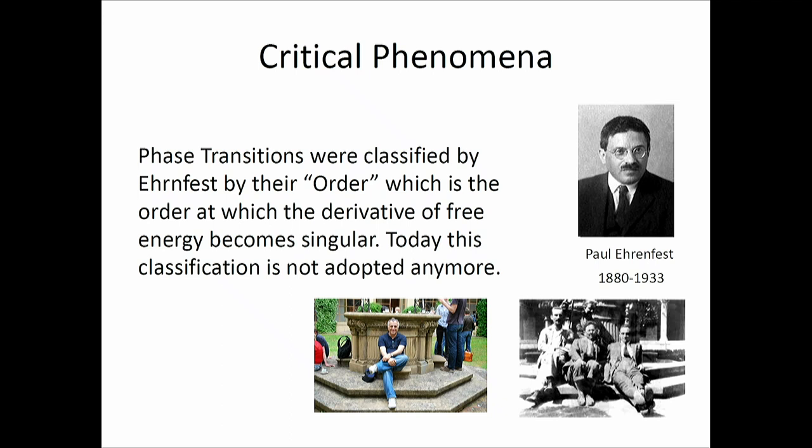Paul Ehrenfest proposed the first idea of what a phase transition is and classified them by their order. At the point of phase transition, the free energy becomes singular — one of its derivatives can be divergent. He said that if the nth derivative becomes singular, we call it an nth order transition. This turned out to be wrong because physics is organized by having first-order (discontinuous) transitions as opposed to continuous transitions, and continuous transitions are classified by their exponents.